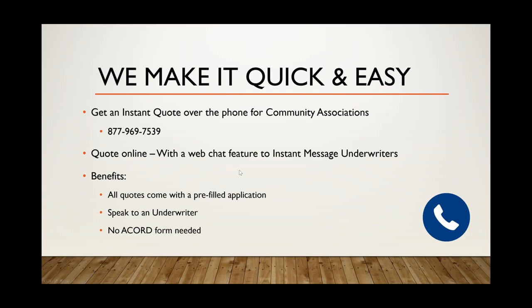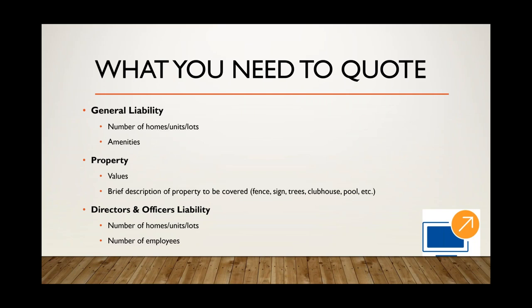Some benefits: we can offer a pre-filled application in most circumstances. You can speak to an underwriter at any time, and no Accord form is needed. To summarize what you need to quote: for general liability, we need the number of homes in the association when completed, and the amenities. For property, we need the values and a brief description of the property to be covered. For D&O, we just need the number of units — we can carry that over from the GL quote. If there are more than 10 employees, we would need to know.